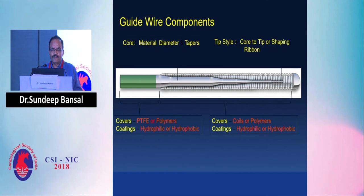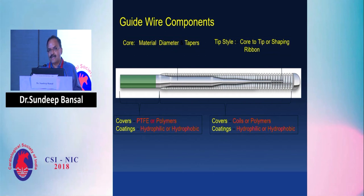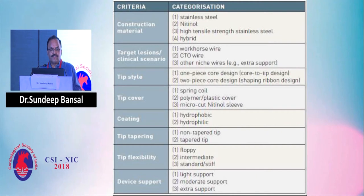Guide wires have a core and a tip. They are classified based on core material, diameter, and whether they taper. They are also classified based on covers and coatings — PTFE or polymer coating, which may be hydrophilic or hydrophobic — and on how they taper.